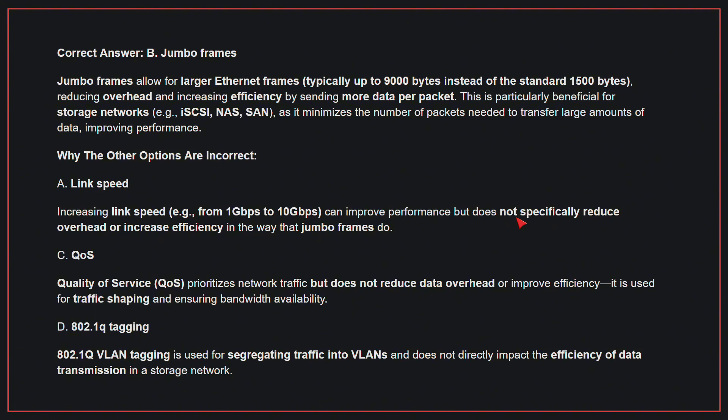Why the other options are incorrect: A, link speed. Increasing link speed can improve performance but does not specifically reduce overhead or increase efficiency in the way that jumbo frames do. C, QoS. QoS prioritizes network traffic but does not reduce data overhead or improve efficiency; it is used for traffic shaping and ensuring bandwidth availability. D, 802.1Q tagging. 802.1Q VLAN tagging is used for segregating traffic into VLANs and does not directly impact the efficiency of data transmission in a storage network. Therefore, the correct answer is B: Jumbo frames.